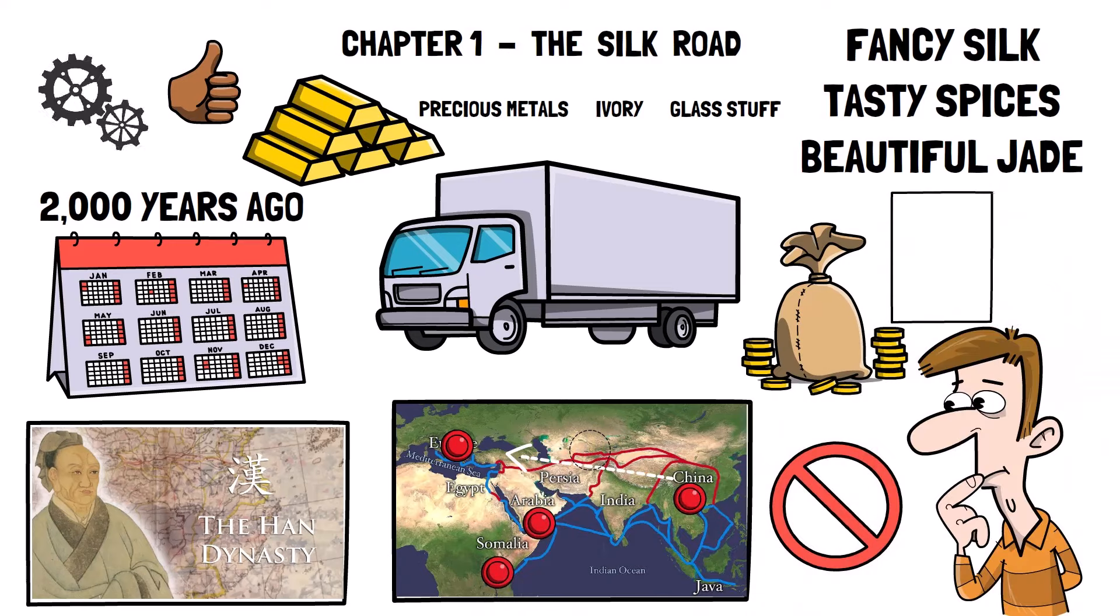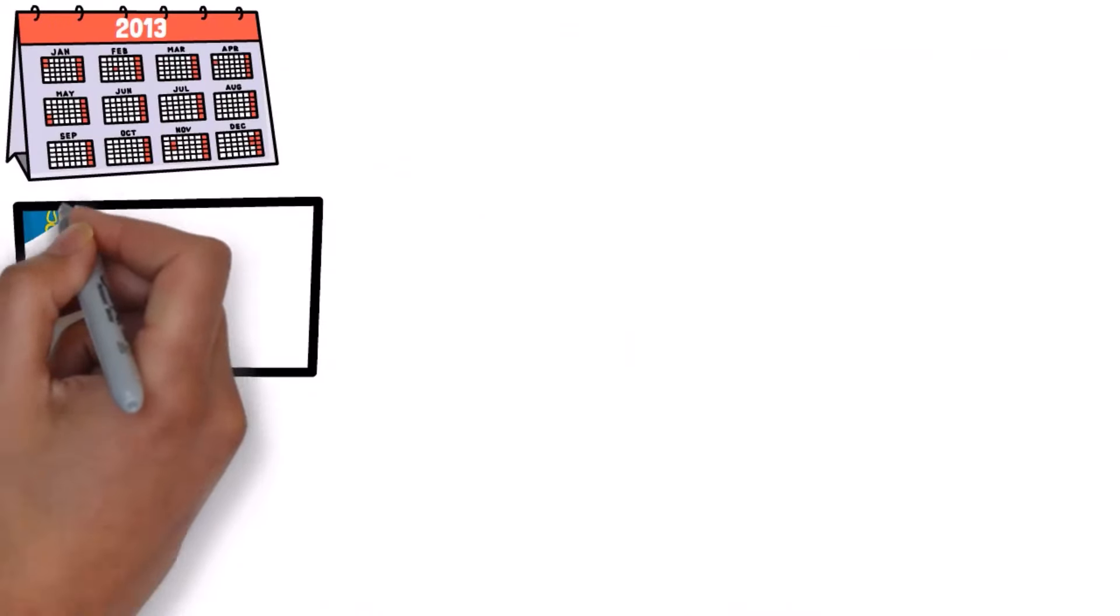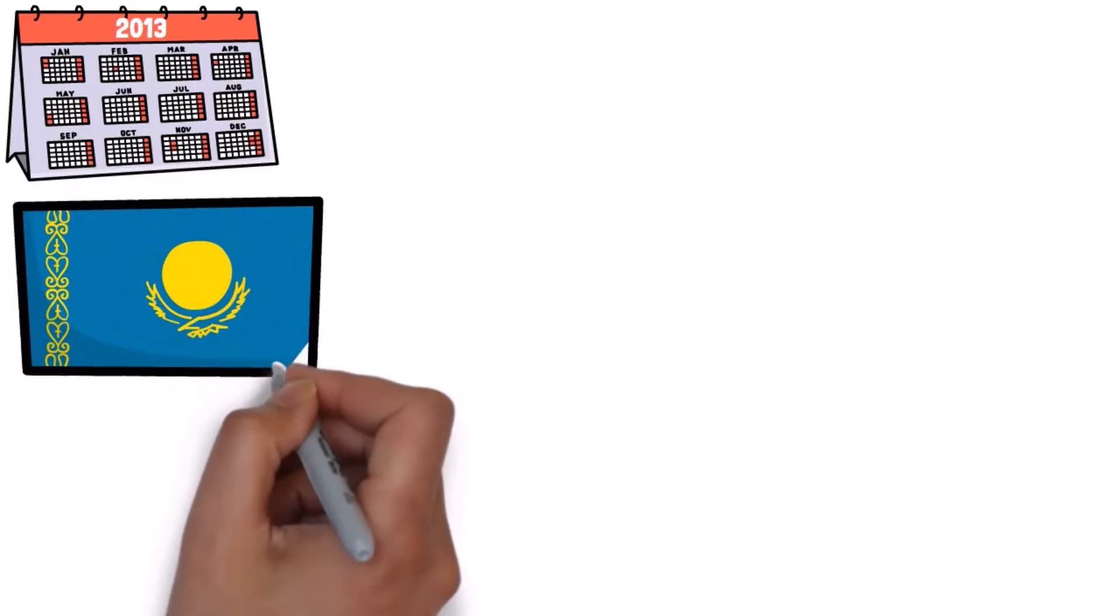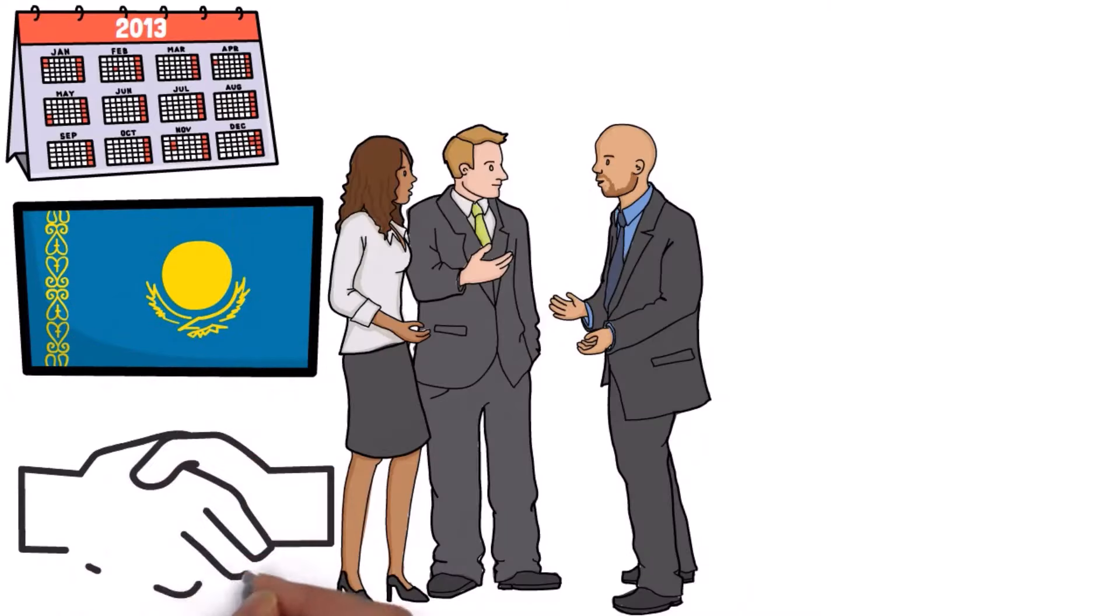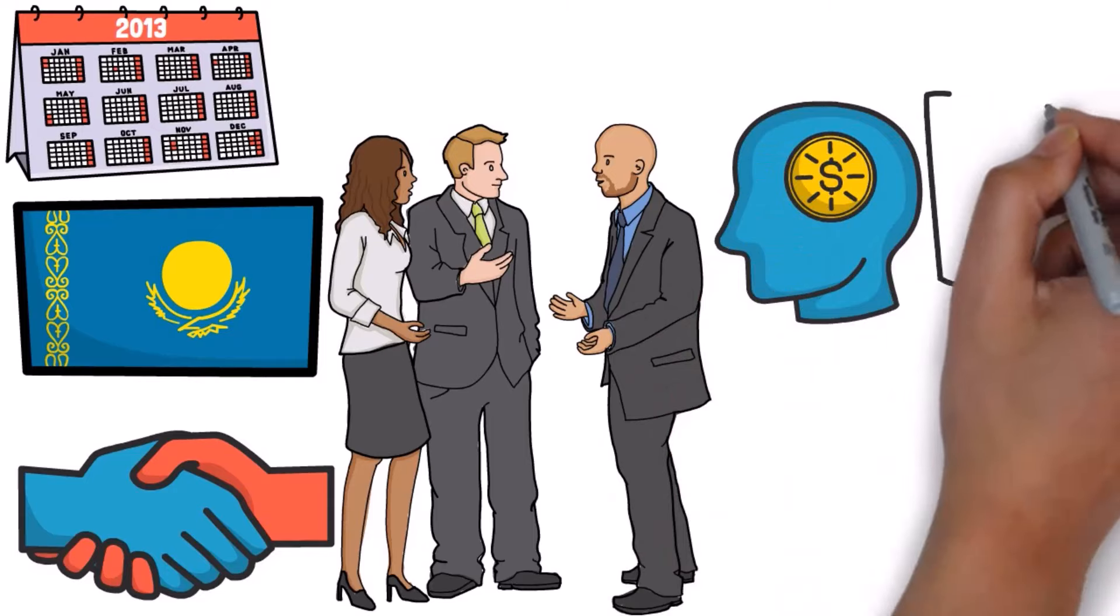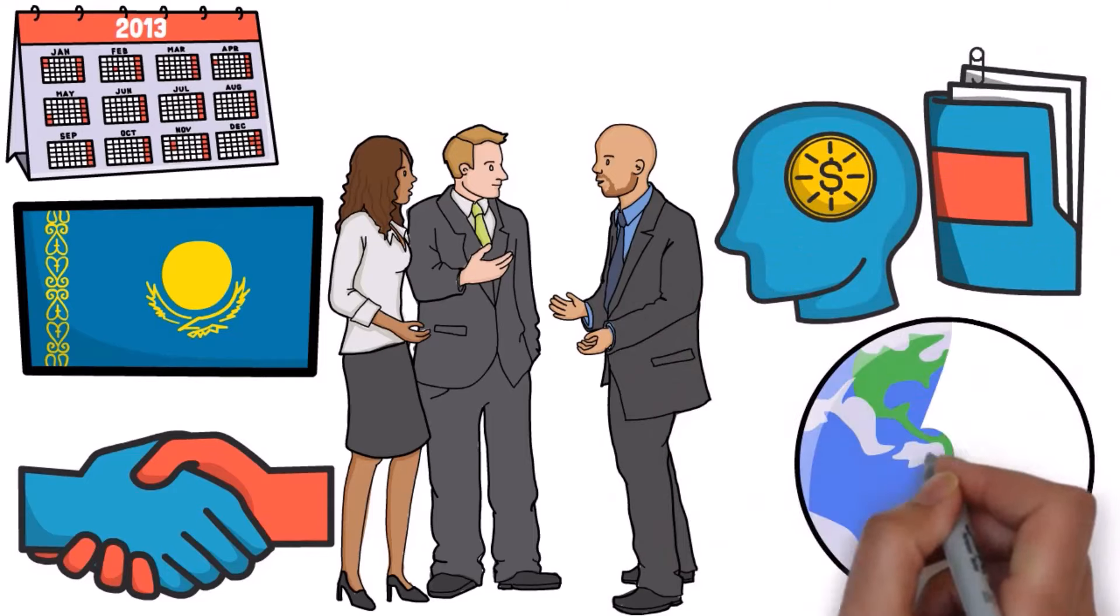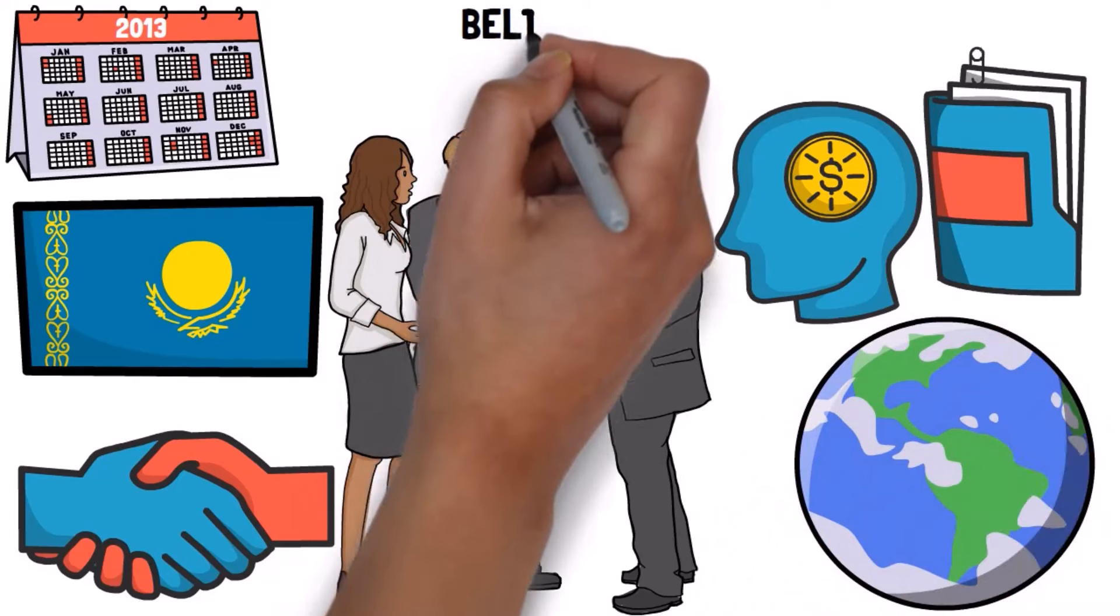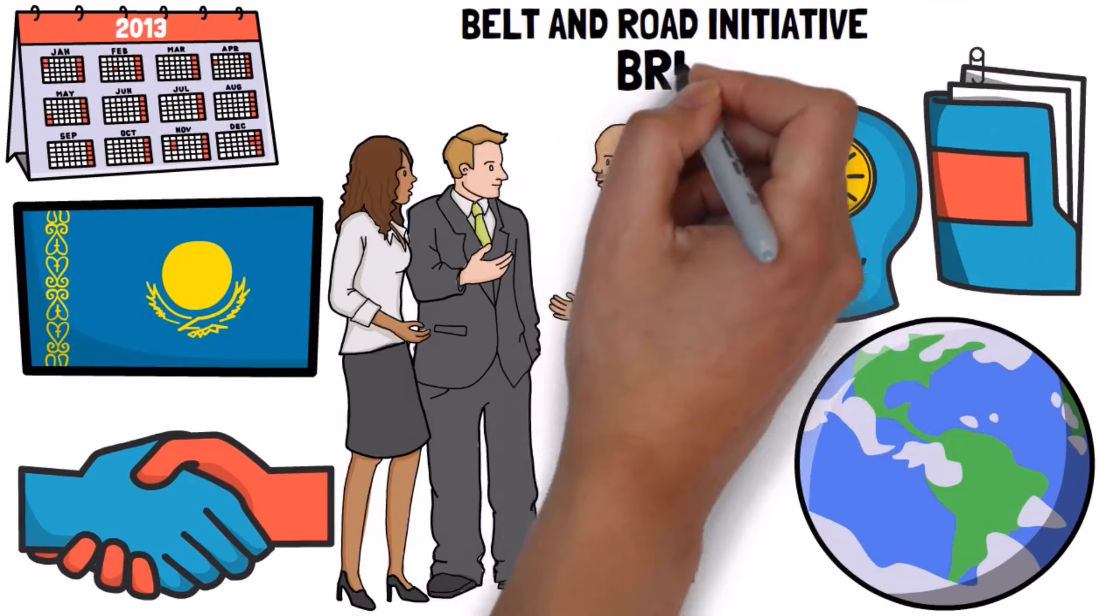When President Xi announced a plan to bring back the Silk Road, it made a lot of sense. In 2013, during a visit to Kazakhstan, leaders wanted to get closer with other countries in Eurasia and do more stuff together. They had a cool idea to make an economic belt along the Silk Road. This was a big project, but it would help people in all the countries along the way. They called this idea the Belt and Road Initiative, or BRI for short.